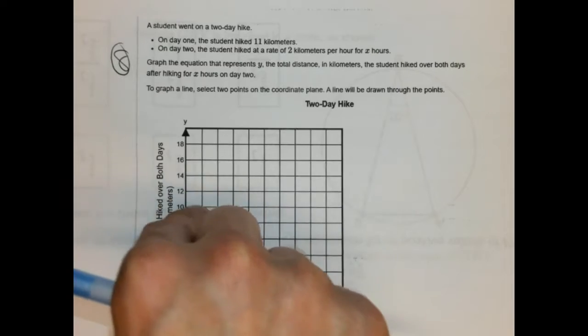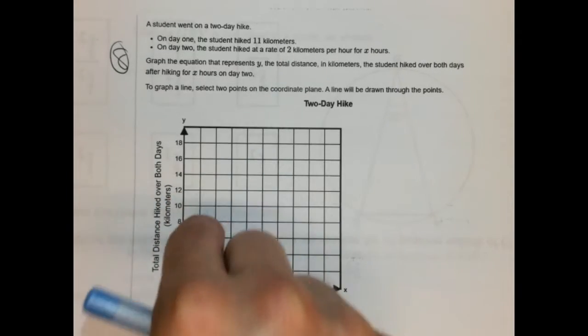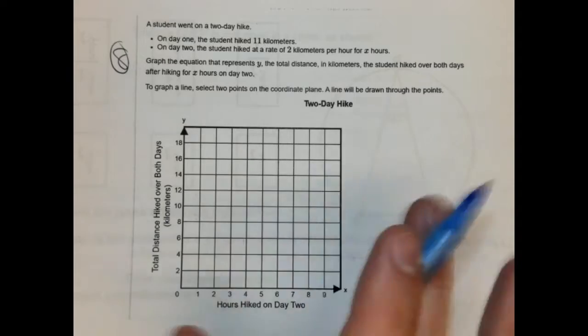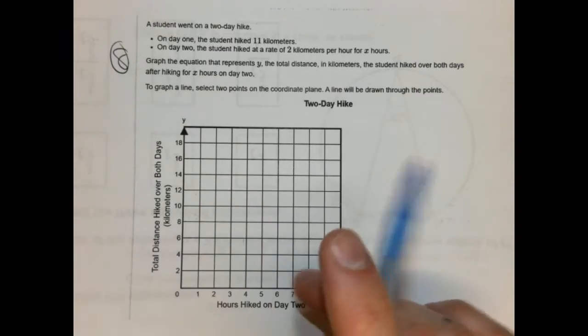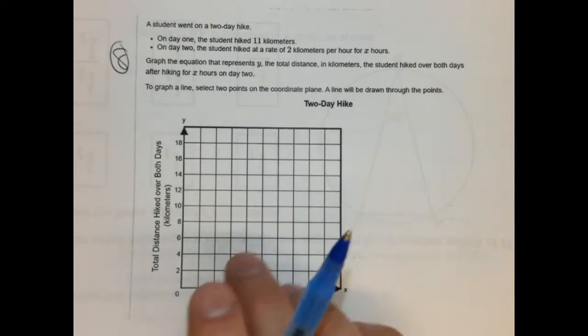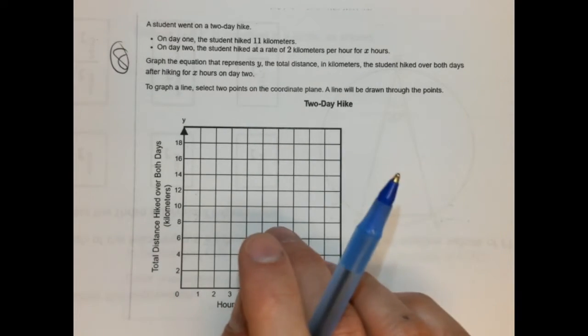You're going to pick a point — it'll put a point there. Then you pick another point and it'll automatically make the line for you. You don't have to draw the line; it'll do it for you. So make sure you're using that link that's in the video description.